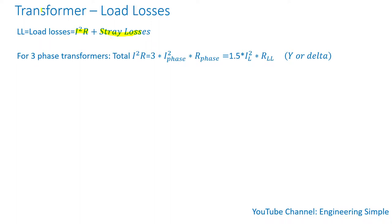For three-phase transformers, the total I squared R — since we have three phases — is three times the phase current squared times the phase resistance, or 1.5 times the line current squared times the line-to-line resistance. This is true for both Y and delta configurations.